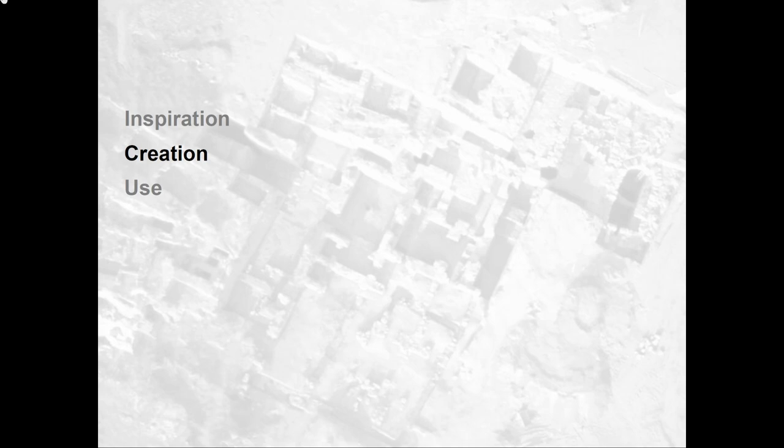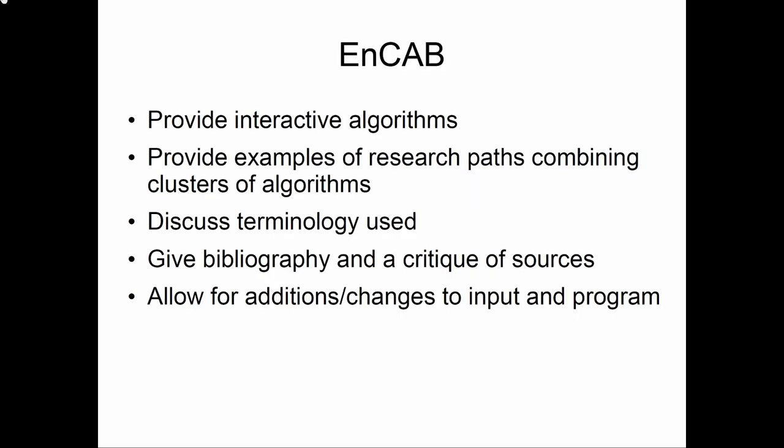The goal of NCAB, with its focus on the algorithms, is to provide interactive algorithms so that other scholars can put in their own data, providing examples of research paths, combining clusters of algorithms which basically follow the chain operatoire, to discuss in detail the terminology used behind the algorithms, and to give direct bibliographical references as well as a critique of the sources. Finally, it's an open access project, allowing for additions and changes to both the input and the program itself.